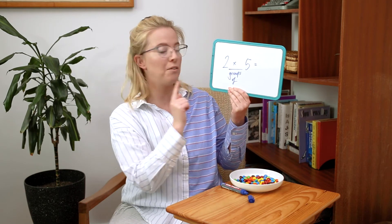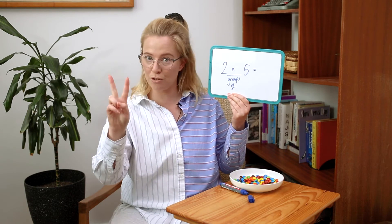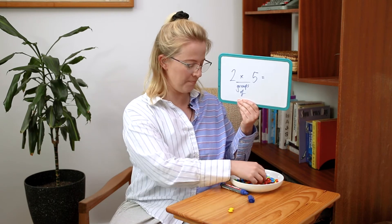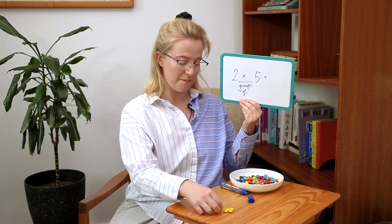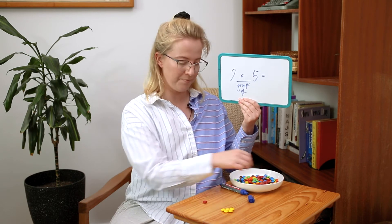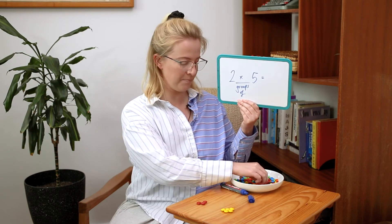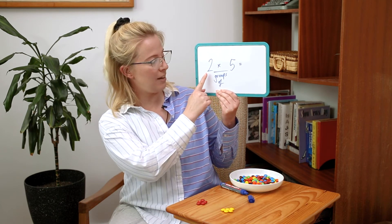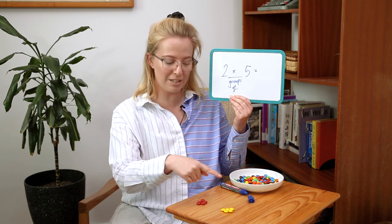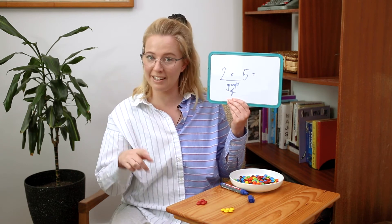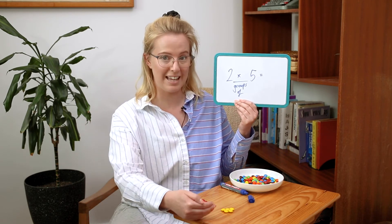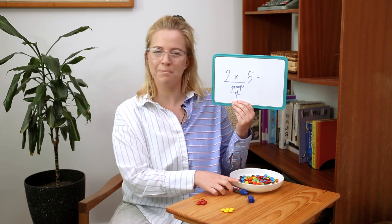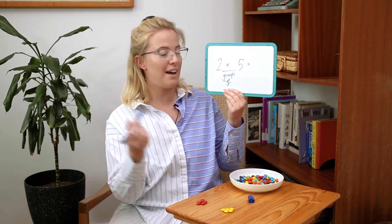Here's the last equation we're going to do all together: two times five, or two groups of five. So I need two groups with five counters in both groups — one, two, three, four, five — and another color — one, two, three, four, five. I have two groups with five counters in each group. If you can do skip counting in fives, you could do five, ten. Counting them all together: one through ten. So two times five, or two groups of five, equals ten.